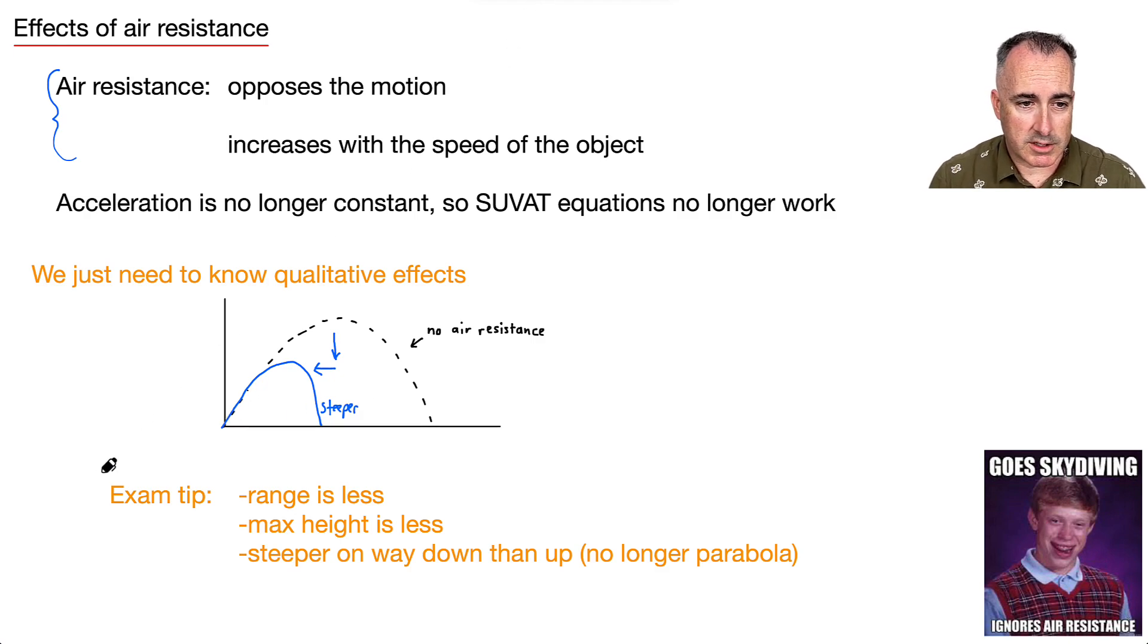Okay, so the range is less. In other words, the distance it travels to the right here is less. The max height is less. And it's steeper on the way down than up. In other words, it's no longer a nice symmetric parabola. If you know those things, that's what you need for the exams.